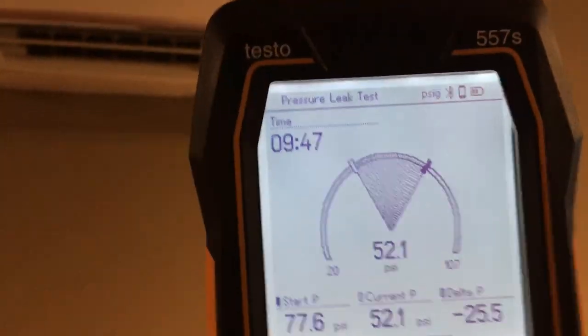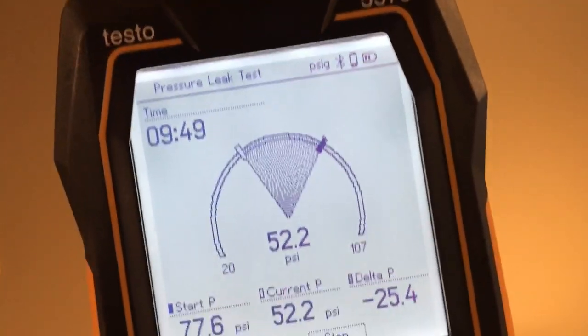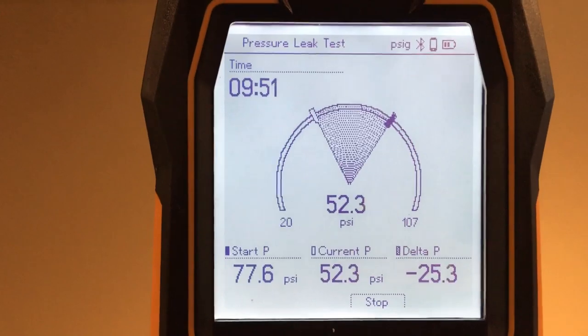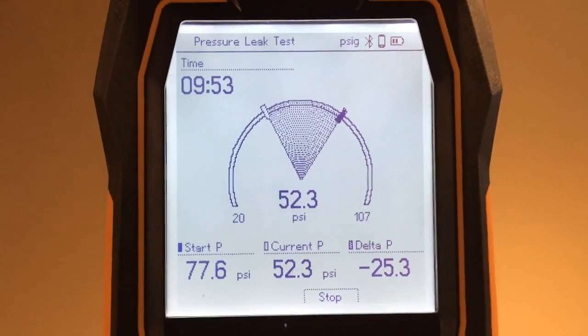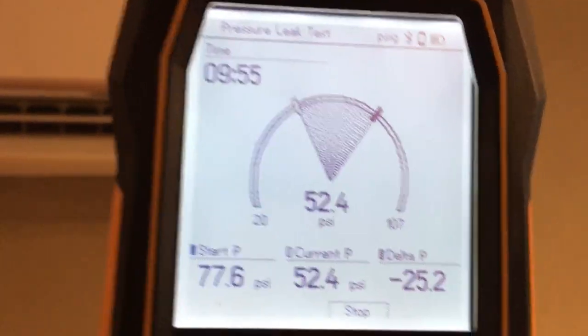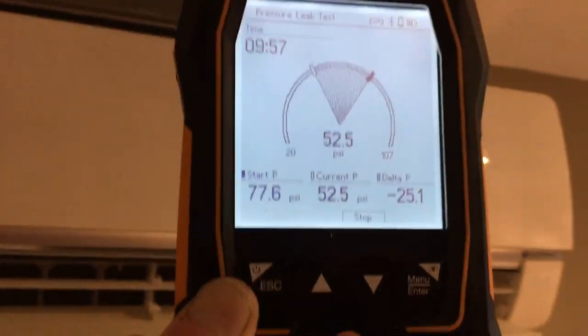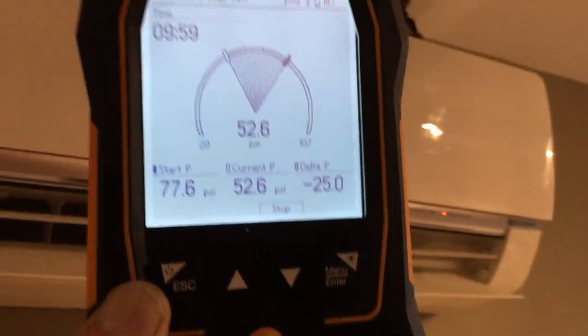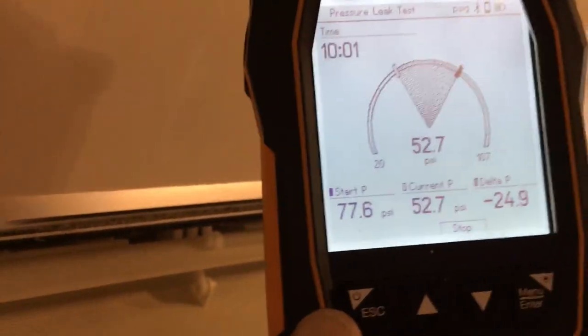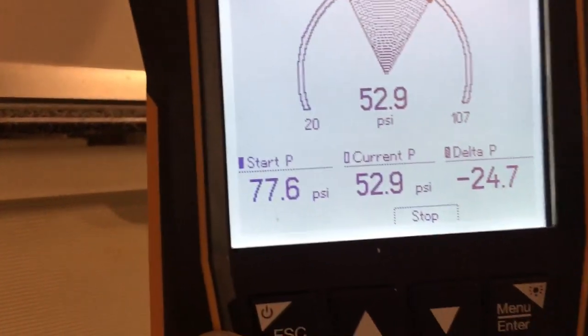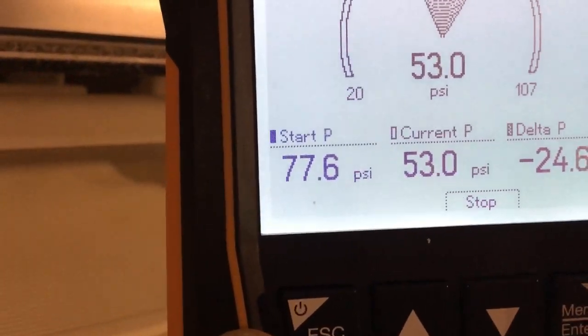So this is why you would not do a pressure test using refrigerant. Because as you can see where the black line was, that is where I started. When I started this, it was at like 79 PSI, 77, 77.6 PSI. That's where I started at.